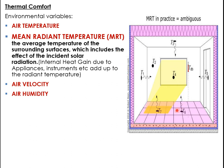Mean radiant temperature is the average temperature of surrounding surfaces, including the effect of incident solar radiation inside a room. MRT is calculated using the black globe thermometer, which gives the global temperature (GT). Internal heat gains from appliances such as projectors, computers, laptops, fridges, and lights all contribute to MRT. The formula is: MRT = GT × (1 + 2.35√V) − 2.35 × DBT × √V, where V is air velocity and DBT is dry bulb temperature.